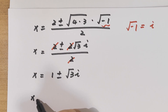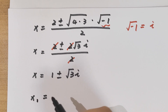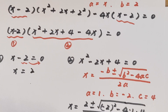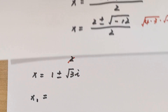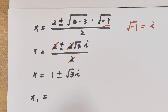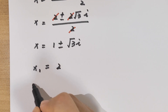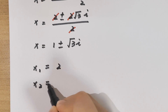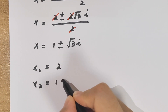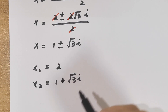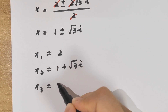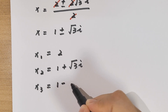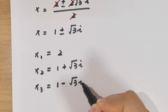So the final answers are: x equals 2, or x equals 1 plus square root of 3 times i, or x equals 1 minus square root of 3 times i.